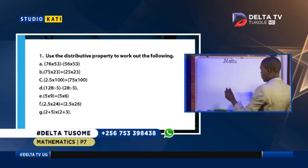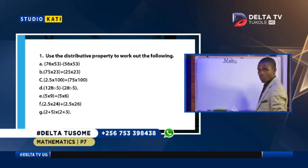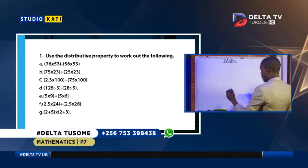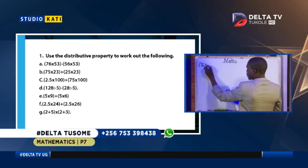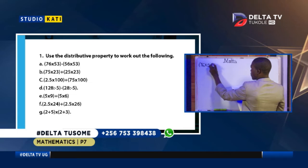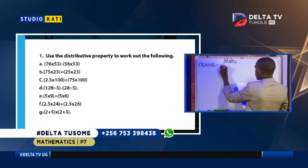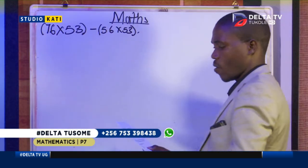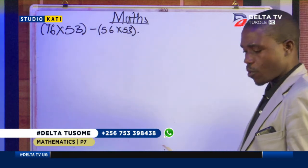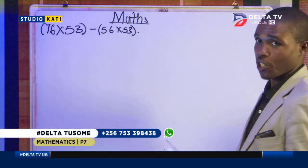Question number one, part A, as you're seeing it on your screen: it is showing 76 times 53 minus 56 times 53. Now to use this distributive property, this is what we do.